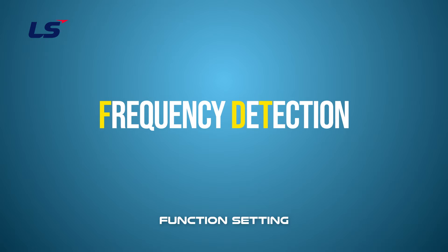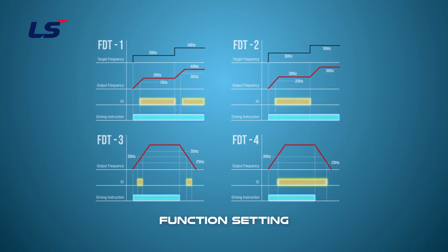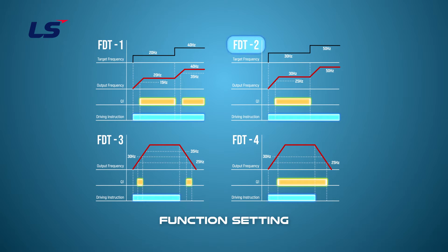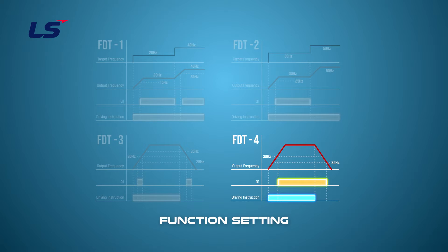Frequency detection is understood as the function to output a contact signal when a set frequency is reached. There is a total of four ways of exporting a contact output, and one function can be set between FDT1, FDT2, FDT3, and FDT4. The sequence used for dual brake control is FDT4.